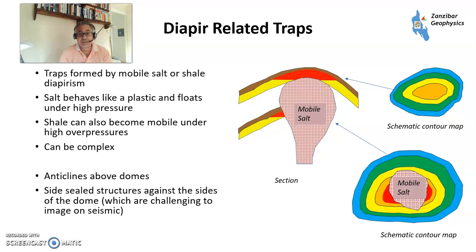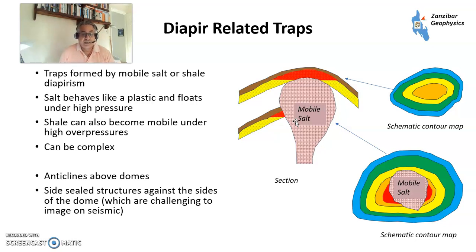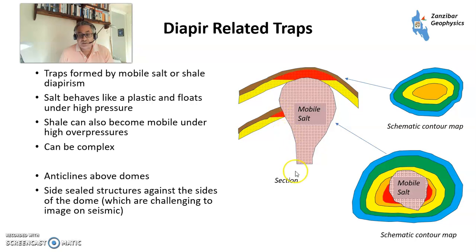Then you have diapir-related traps. Rock salt — halite — behaves like plastic and can float under high pressure, effectively forming a diapir that punches through sediment. These can be very complicated and difficult to image on seismic, so pre-stack depth migration and other advanced algorithms really help. There are two trap types associated with diapirs: on top of the salt dome, which is relatively simple, and along the side of the salt dome, which is much more complicated with extra seal-failure risk at the sediment-salt interface.